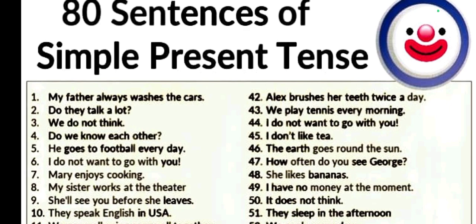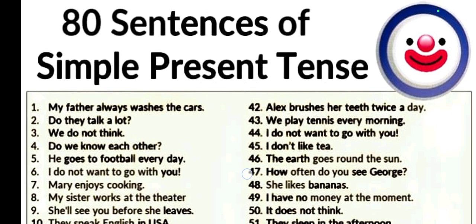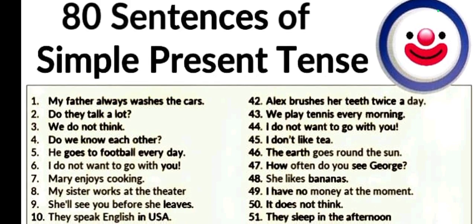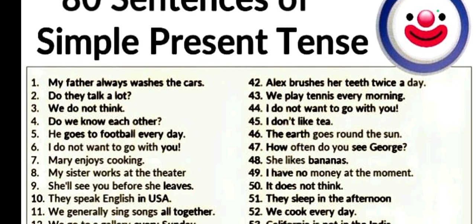So let's get started. The formula of simple present tense is: subject plus verb plus object, or more specifically, subject plus first form of verb plus object. Let's see the sentences so you will come to know what simple present tense is.